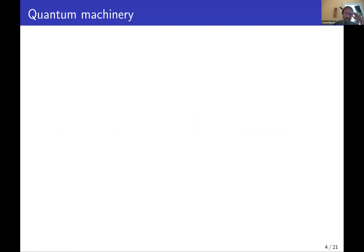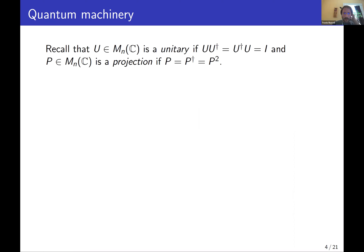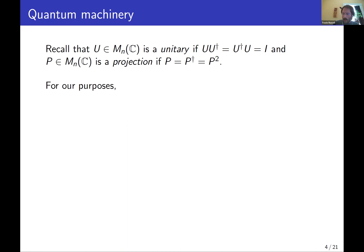Here are some of the mathematical ingredients we use. A complex N by N matrix U is called a unitary if its inverse is its conjugate transpose U†. A matrix P is called a projection if it's Hermitian — equal to its conjugate transpose — and also equal to its square. A projection matrix literally projects vectors onto a subspace of Hilbert space. For the purposes of this talk, a state is a unit vector in a Hilbert space, and the Hilbert space we'll always be working in is the N-qubit Hilbert space: the N-fold tensor product of the two-dimensional Hilbert space with itself.